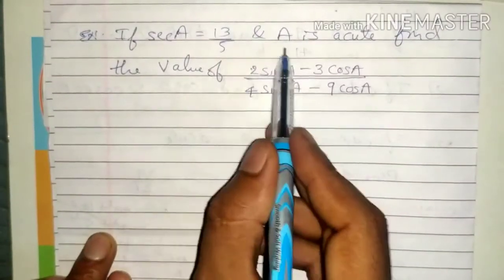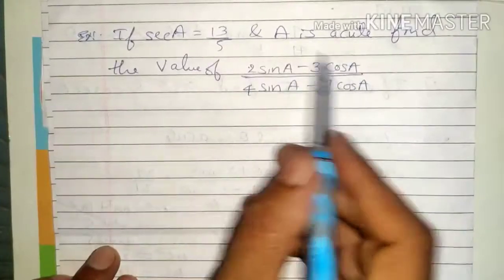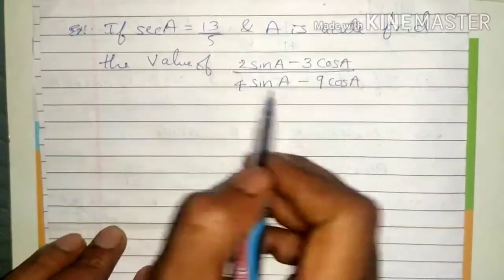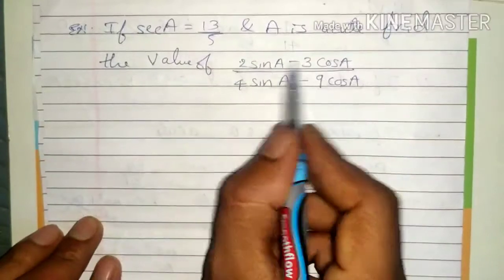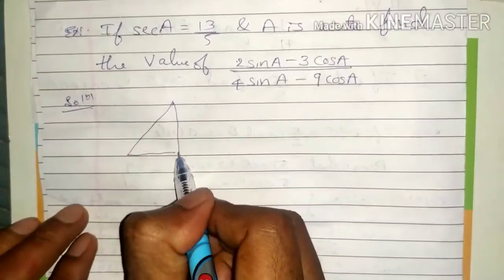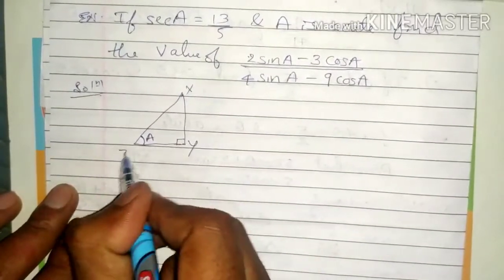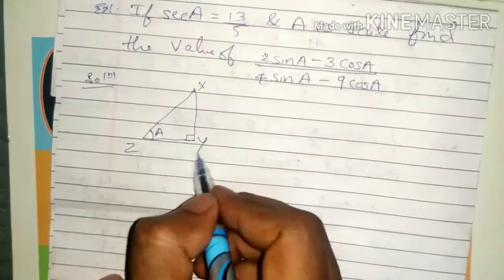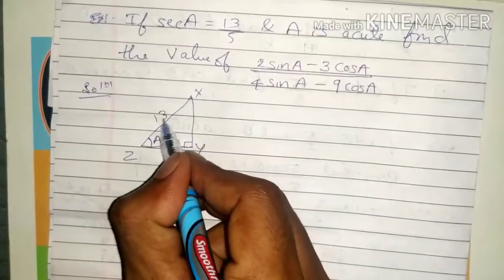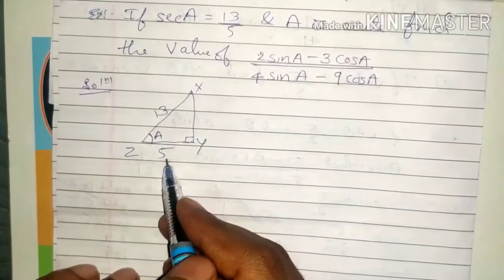Next problem: if sec A equals 13 by 5 and A is acute, find the value of 2 sin A minus 3 cos A divided by 4 sin A minus 9 cos A. Here A is used instead of theta. Using a right angle triangle XYZ, sec A equals hypotenuse by adjacent, so hypotenuse XZ is 13 and adjacent YZ is 5. Using Pythagoras theorem: XZ squared equals XY squared plus YZ squared.